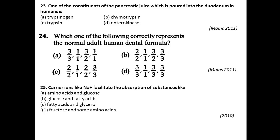Question twenty-three: One of the constituents of the pancreatic juice which is poured into the duodenum in humans is? The options are trypsinogen, chymotrypsinogen, enterokinase, and trypsin. The answer is trypsinogen.